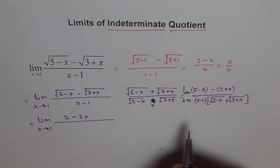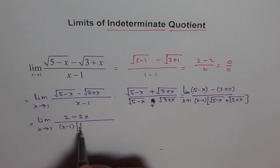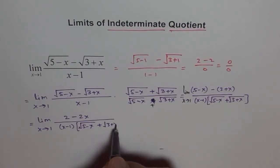And over we get x minus 1 times this, which is square root of 5 minus x plus the conjugate of this term, which is 3 plus x.